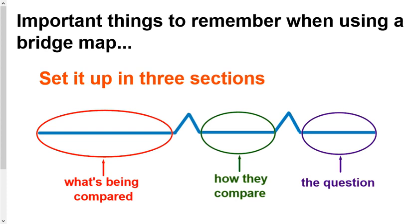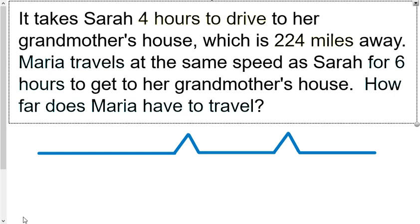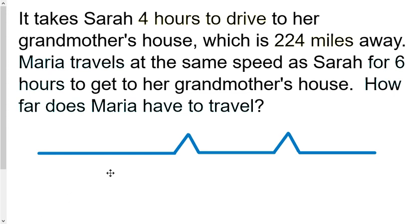For our example, if we want to set that one up, we first figure out what two things are being compared. This problem is all about comparing miles and hours, so that goes in our first section. It would be okay to put hours on top and miles on the bottom. It doesn't matter as long as the numbers you put in match where you put your units. The second section is what we know. Sarah has to drive for 4 hours and that is 224 miles. Notice the 224 goes on top because miles are on top. The 4 goes on the bottom because hours are on the bottom.